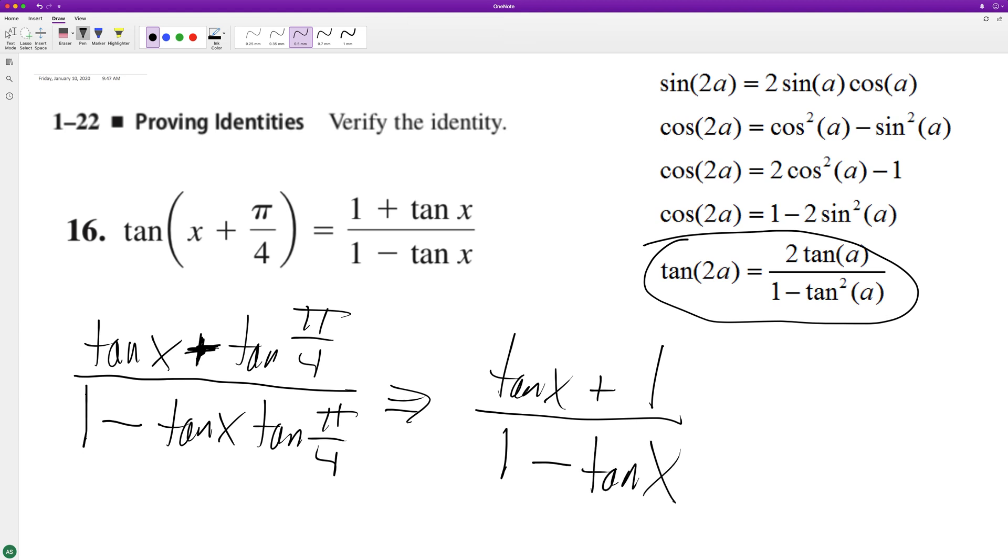Because tangent of π/4 is 1, 1 times tangent of x is 1. So rearranging this, what we have up there just becomes 1 plus tangent of x over 1 minus tangent of x, and that's it.